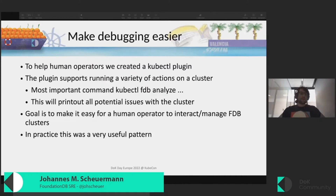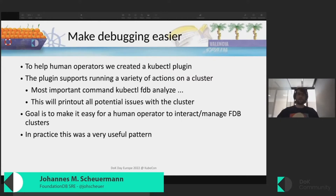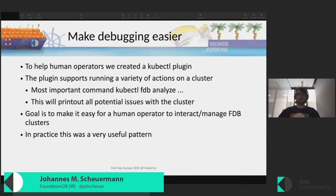One thing we discovered is the need to make debugging easier, which is why we built a kubectl plugin fairly early on. One of the most important features is kubectl-fdb-analyze, which prints out all potential issues with the clusters. In practice this was a super useful feature to help human operators figure out why a cluster is in a non-desired state.